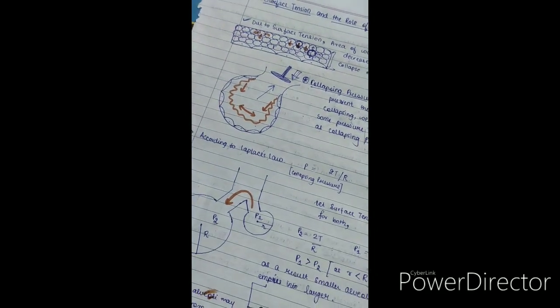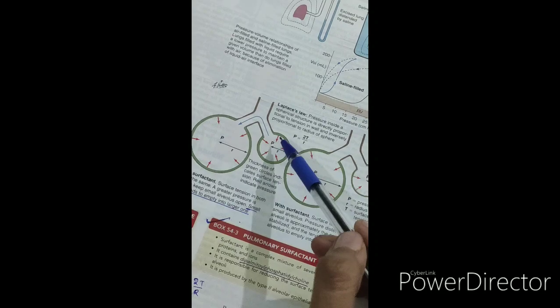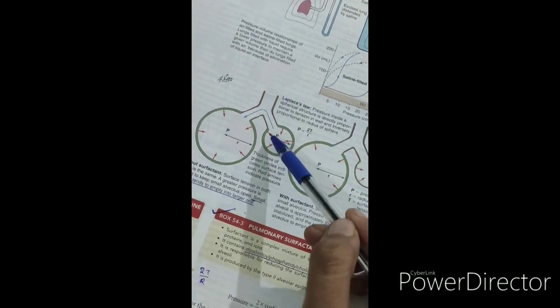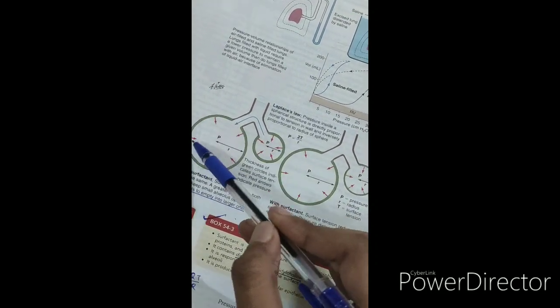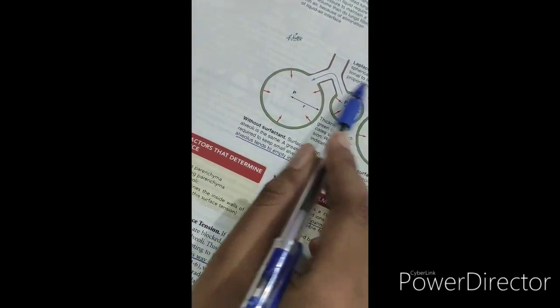There is a diagram given in the Ganong. If you look at this diagram, it states that in case we are having alveoli of two different sizes, a small alveoli or an alveoli with a larger radius, then it states that smaller alveoli tends to empty into the larger one. Now what is the reason for this?